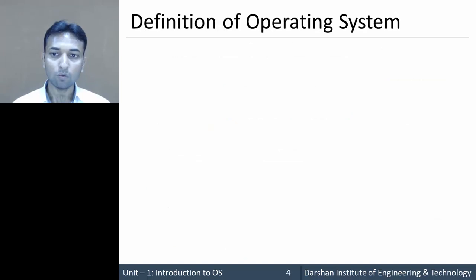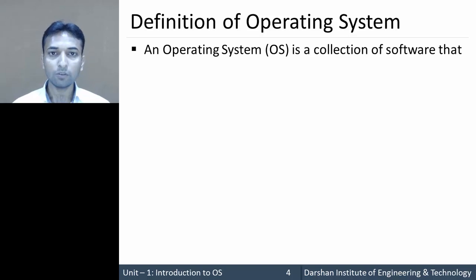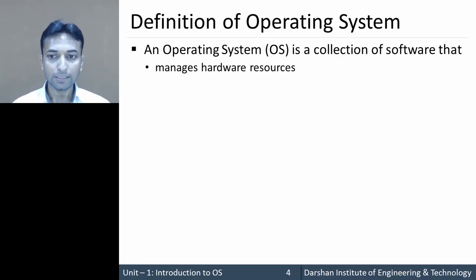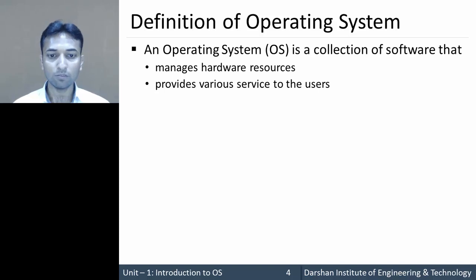Now let us move further to the actual definition of an operating system. If we want to define it, an operating system is a collection of software that manages hardware resources and provides various types of services to the user.